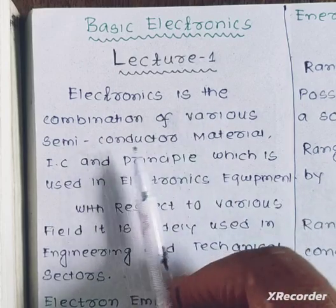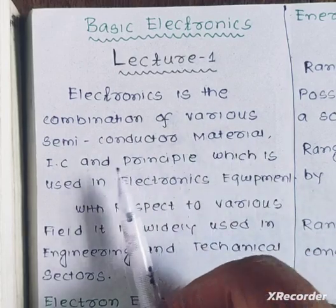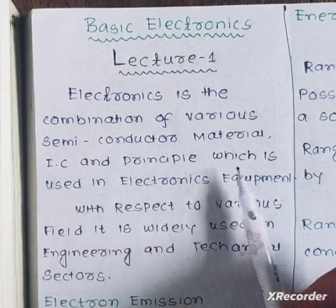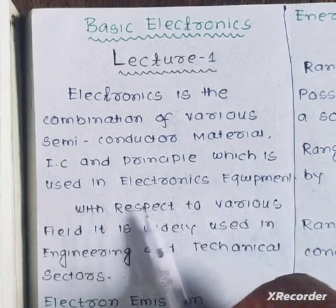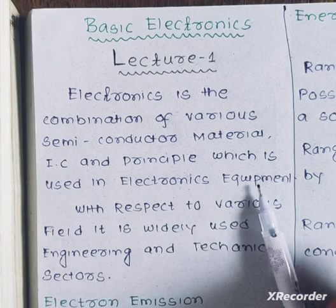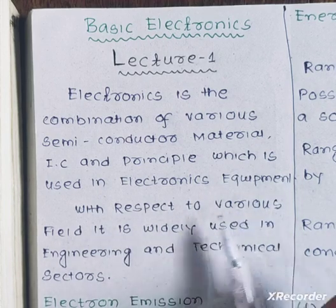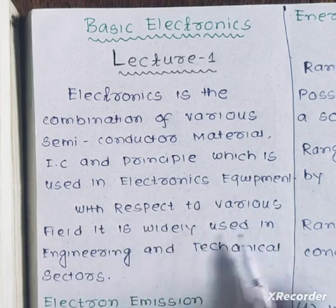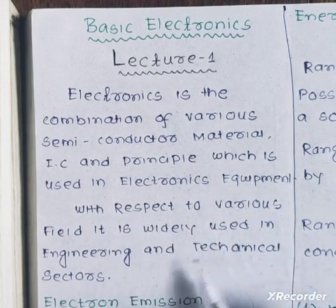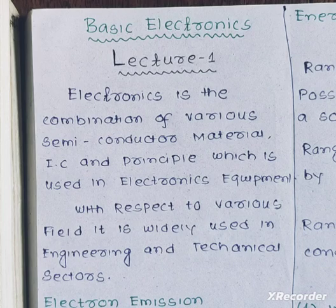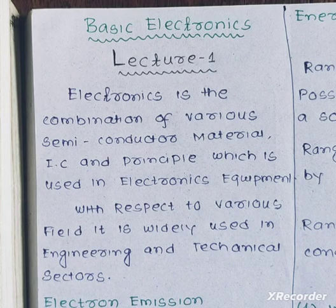Electronics is the combination of various semiconductor materials, ICs (integrated circuits), and principles which are used in electronic equipment. With respect to various fields, it is widely used in engineering and technical sectors. We are going to discuss this further in our continuous video.